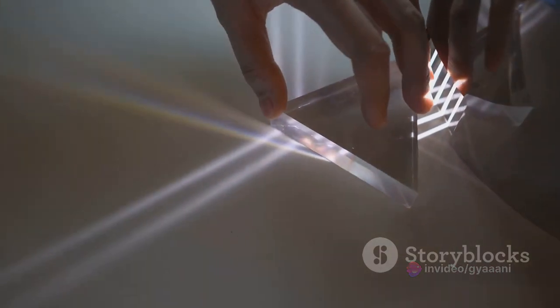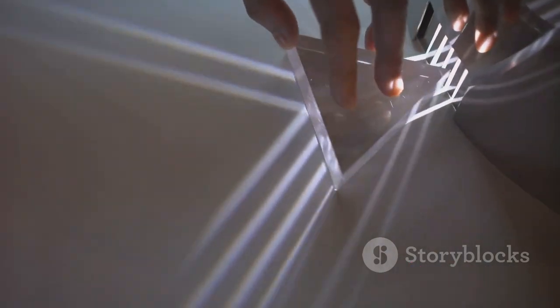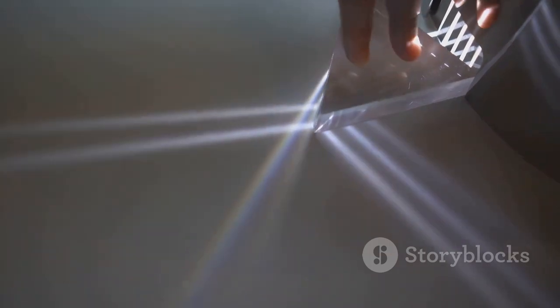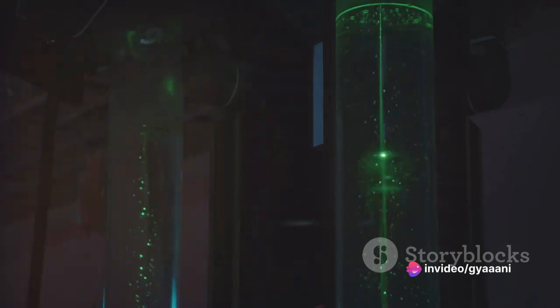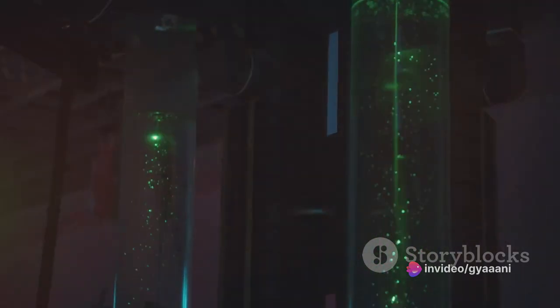The theorists argue passionately that these phenomena, specifically interference and diffraction, provide indisputable evidence that light truly propagates in waves. These phenomena, they assert, can only be explained if light is regarded as a wave.